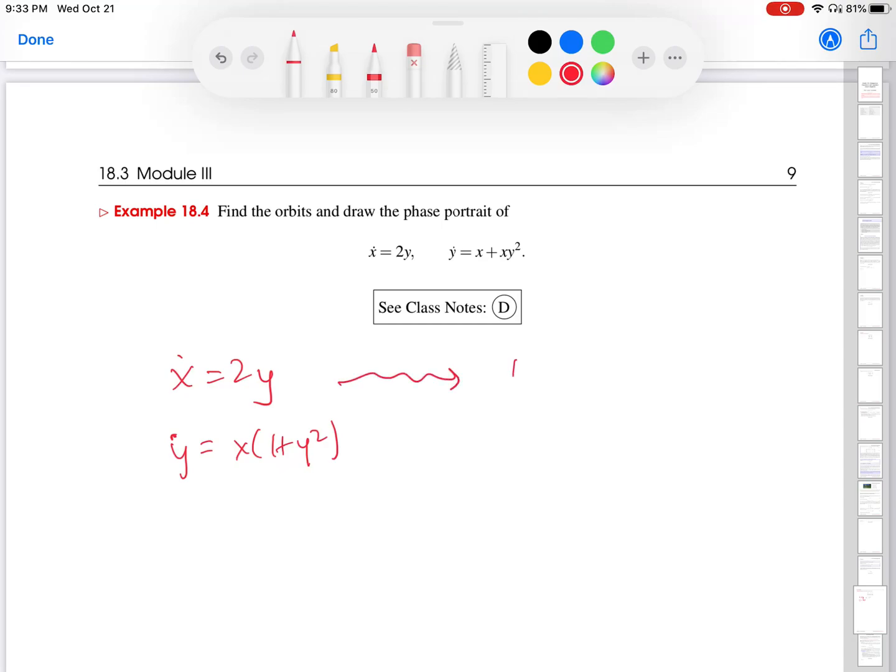So if I go here, I'll notice that if Y is positive, X dot is positive. And if Y is negative, X dot is negative. So what does that tell me? If I go to the phase plane, Y positive means that I'm above the X axis. So if I'm above the X axis, then X dot is positive. This tells me that X is increasing.